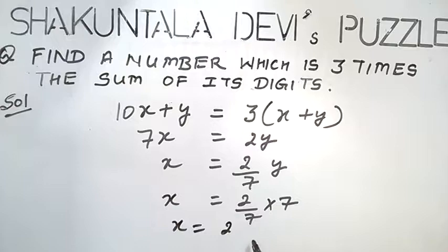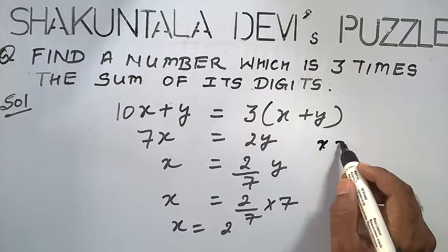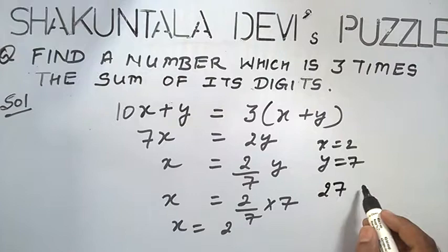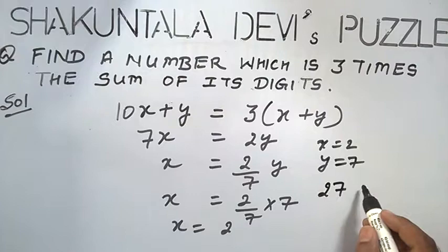In this way, we get x is equal to 2 and y is equal to 7. So the number will be 27. That is 3 times the sum.